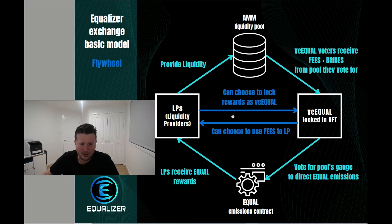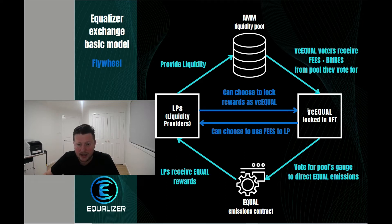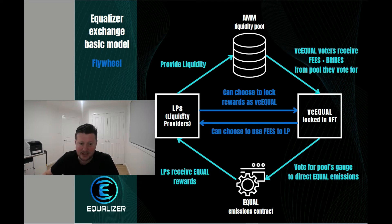Then we add in an extra dynamic where you can start to use strategies and really get the flywheel going. You can choose to lock your rewards that you get from providing liquidity. When you get your Equal from the contract as it's minted, it's very easy to then lock it so you get the ability to earn fees coming in. So you start to get this real flywheel happening — you can lock your Equal that's coming through while providing liquidity, and then you can start to direct the Equal from the contract back to the pool you're using.